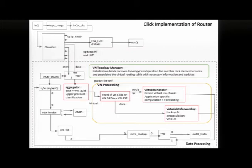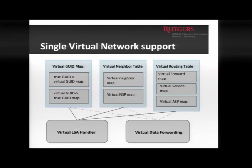The implementation was done using Click modular software router, a C++ based routing platform, which is also what the Mobility First prototype is built on. Click works with a pipeline of modules that process each incoming packet. We introduced virtual processing elements: when a packet is identified as meant for the virtual layer, it enters that branch of the pipeline, gets processed, and is forwarded accordingly. Experiments were conducted on the ORBIT testbed here at Winlab.